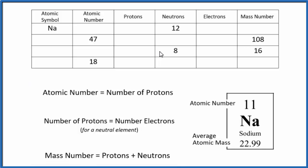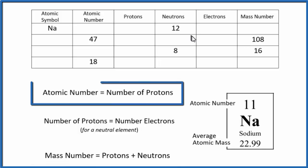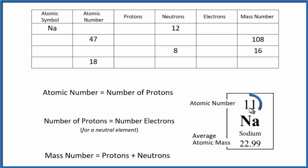Let's get started. The first rule is that the atomic number equals the number of protons. We find the atomic number on the periodic table — it's usually the number above the element symbol, and it'll be a whole number. So we can fill in a lot of things on the table just based off knowing the atomic number.